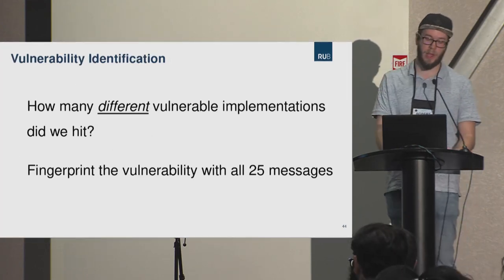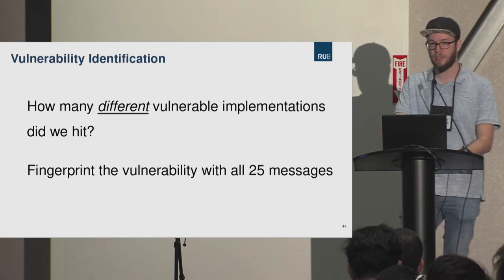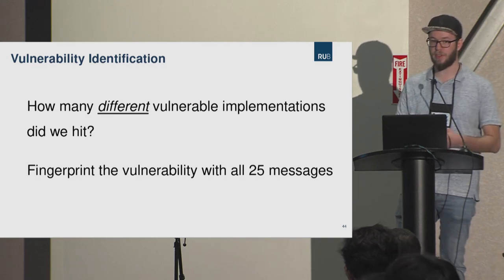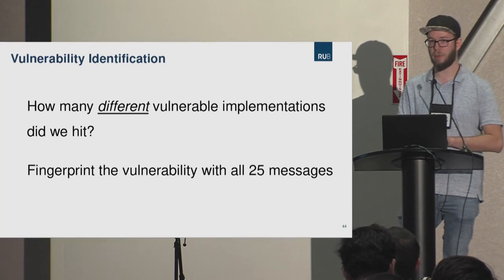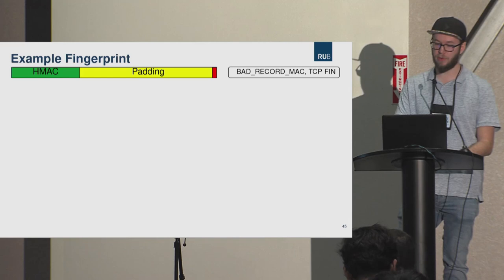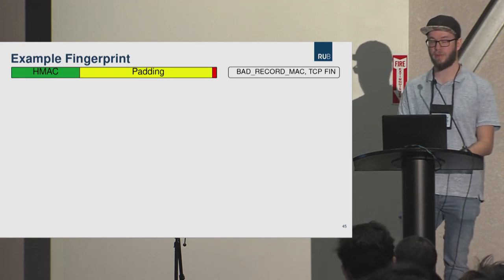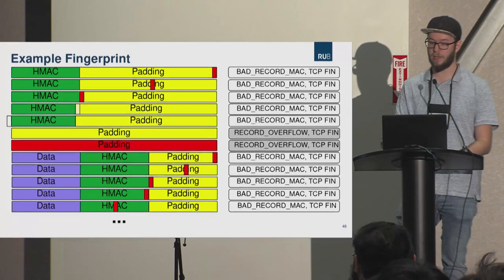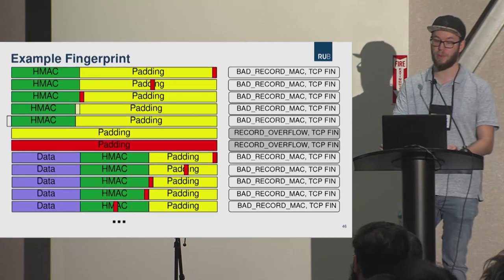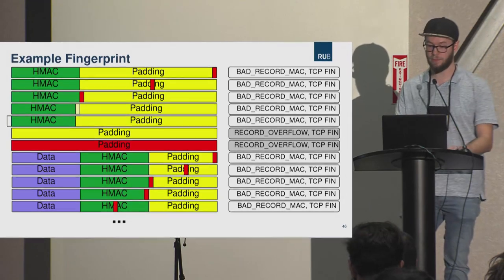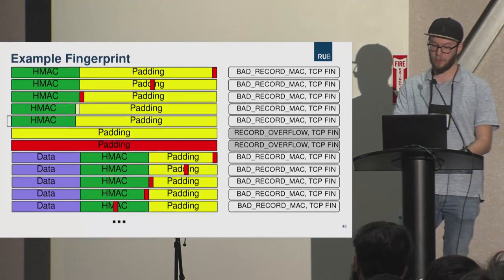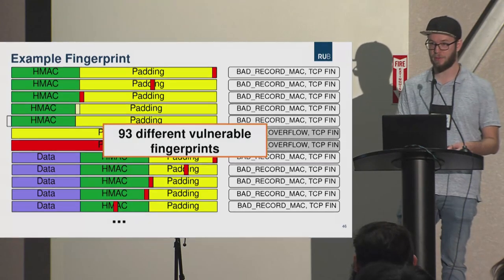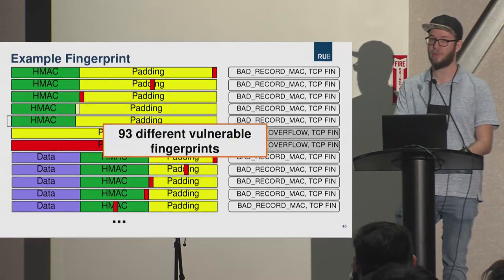We asked how many different vulnerable implementations we actually found. To investigate, we fingerprinted all vulnerable servers by sending all 25 malformed messages and comparing the resulting response patterns. A fingerprint shows the message sent on the left and the server's response on the right — for example, a bad record MAC with a TCP FIN. Adding all messages produces a full fingerprint showing the behavior difference that makes the server vulnerable. In total we found 93 different vulnerable fingerprints, suggesting there are likely 93 different vulnerable implementations deployed in the Alexa top 1 million.